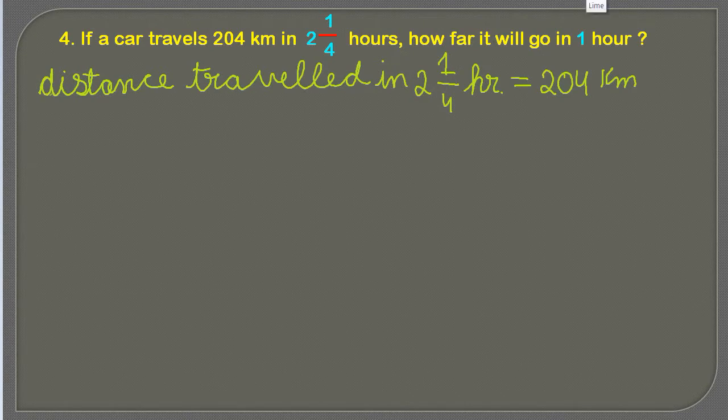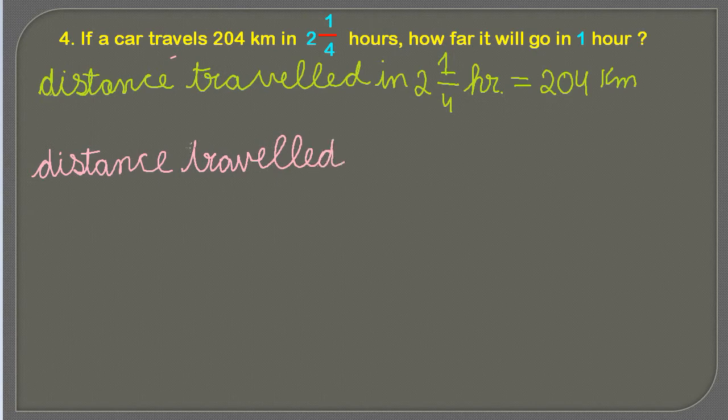As you guessed, we are going to divide it, so we're going to write the second statement: distance traveled in 1 hour. Again, I'm using hr for the short form for hours.